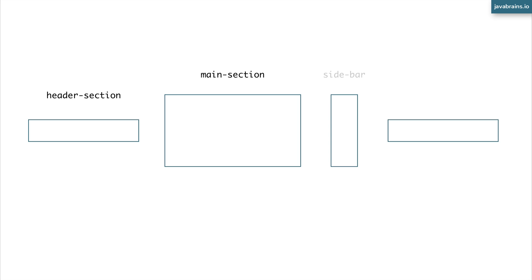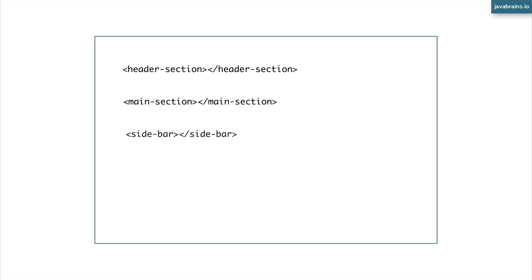Once you've created a bunch of these components, each one can have a name or a selector. You register these components with Angular — you basically tell Angular that you've created these components and given them names. For example, you say: hey Angular, I have a header section component and it goes by the name 'header-section'; I have a main section component which goes by the name 'main-section.' Now in your Angular application, you can use those selectors and Angular will pull the corresponding component and render it to the UI. This is the component-based model, very different from how we traditionally think about front-end development — you're not thinking HTML and JavaScript, but thinking units of UI that you register with Angular and use in multiple places.